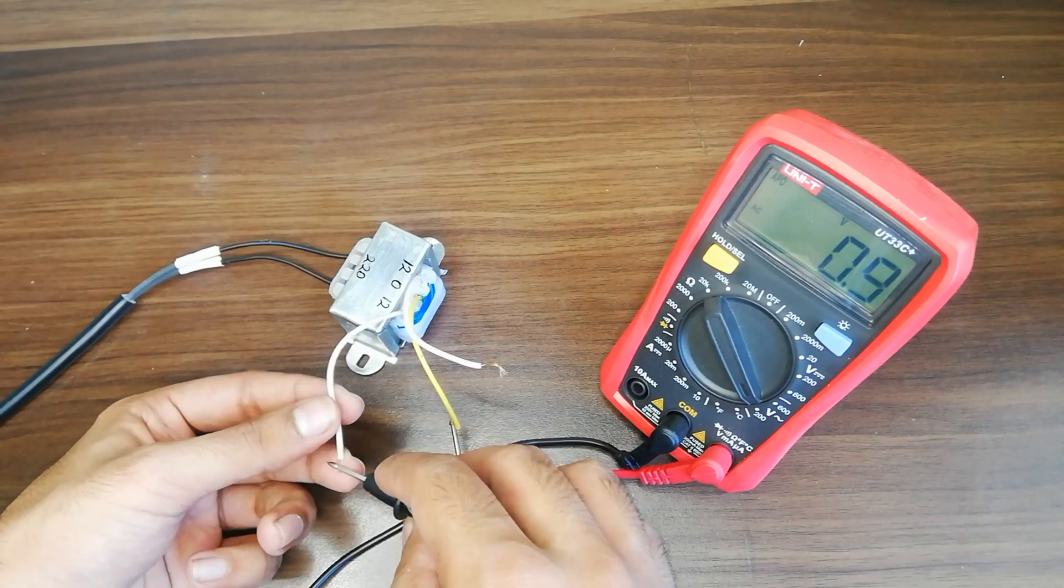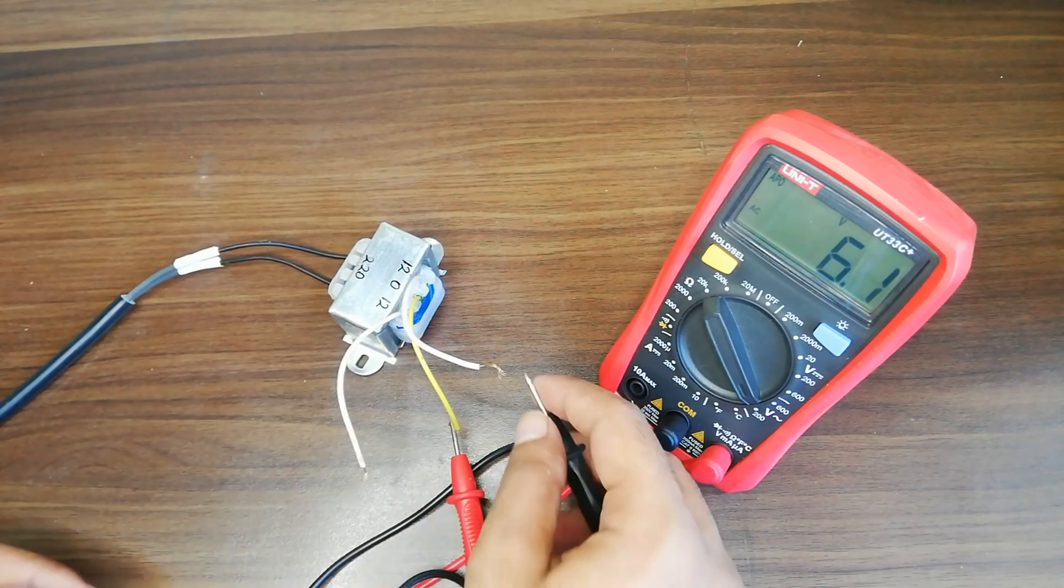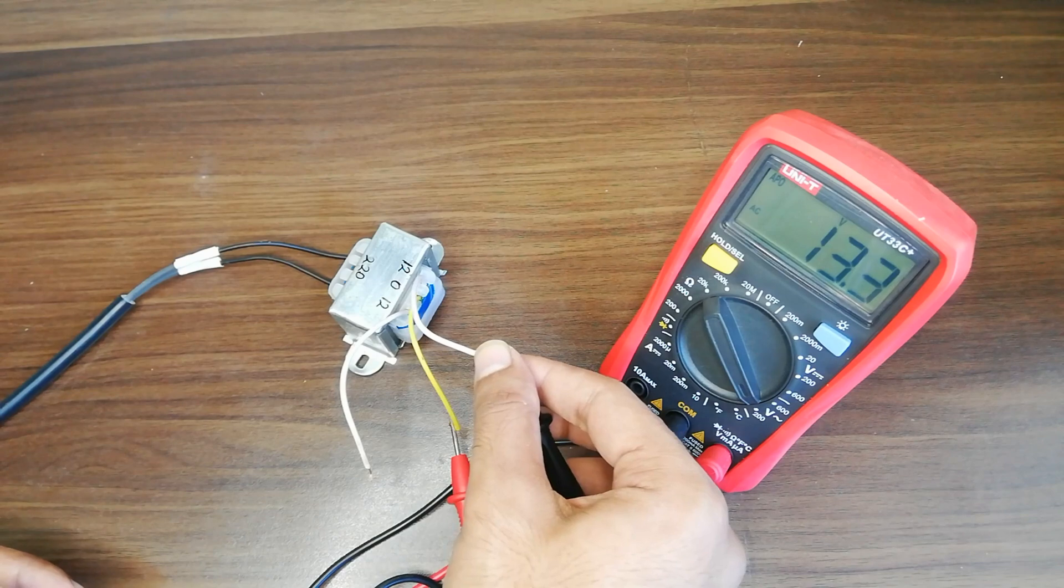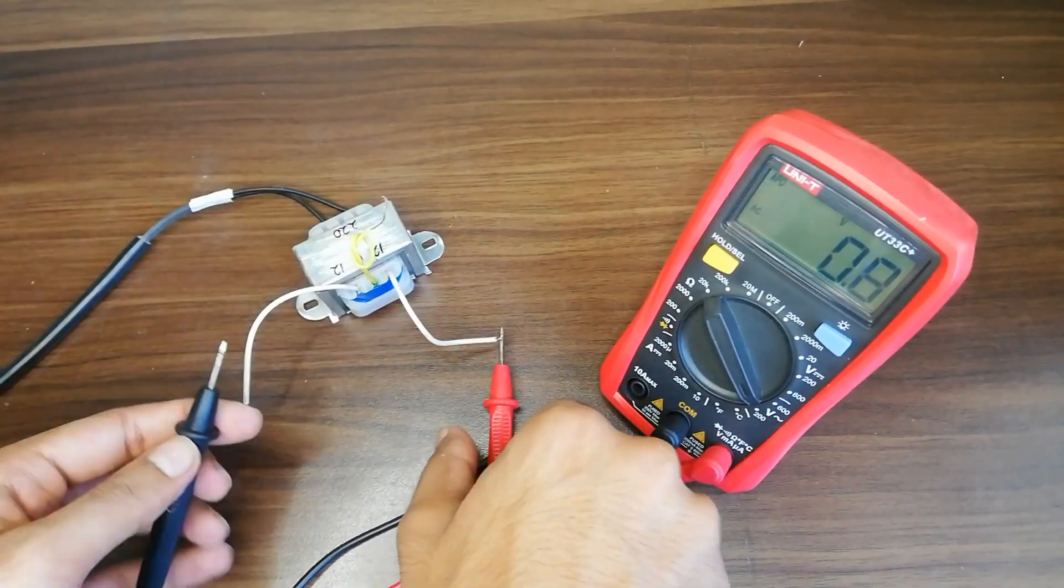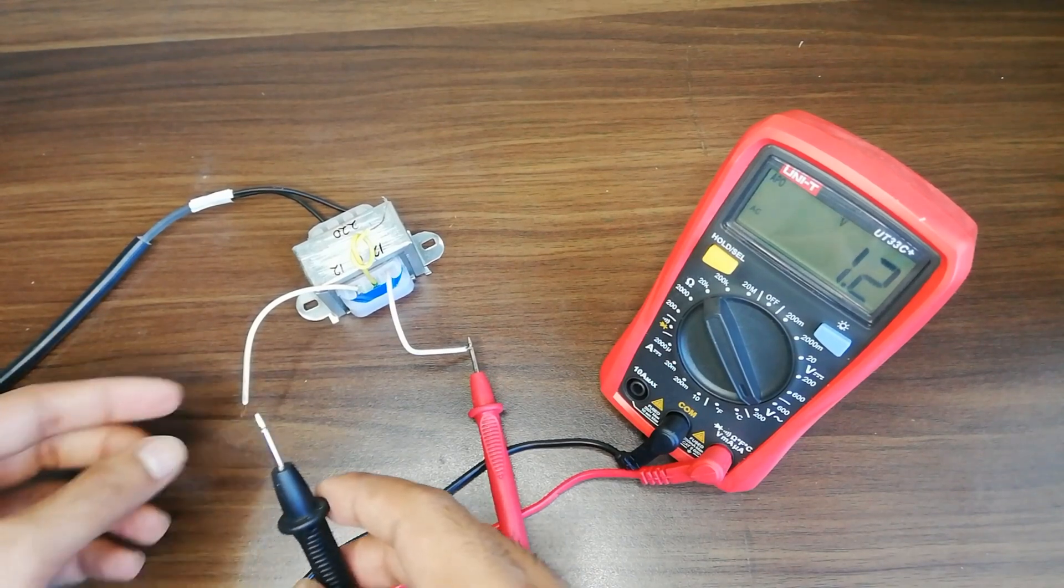Here you can see if I use the center tap with any of the coil ends, I get approximately 13 volts at the output. However, using only the coil ends gives the double, which is 26 volts.